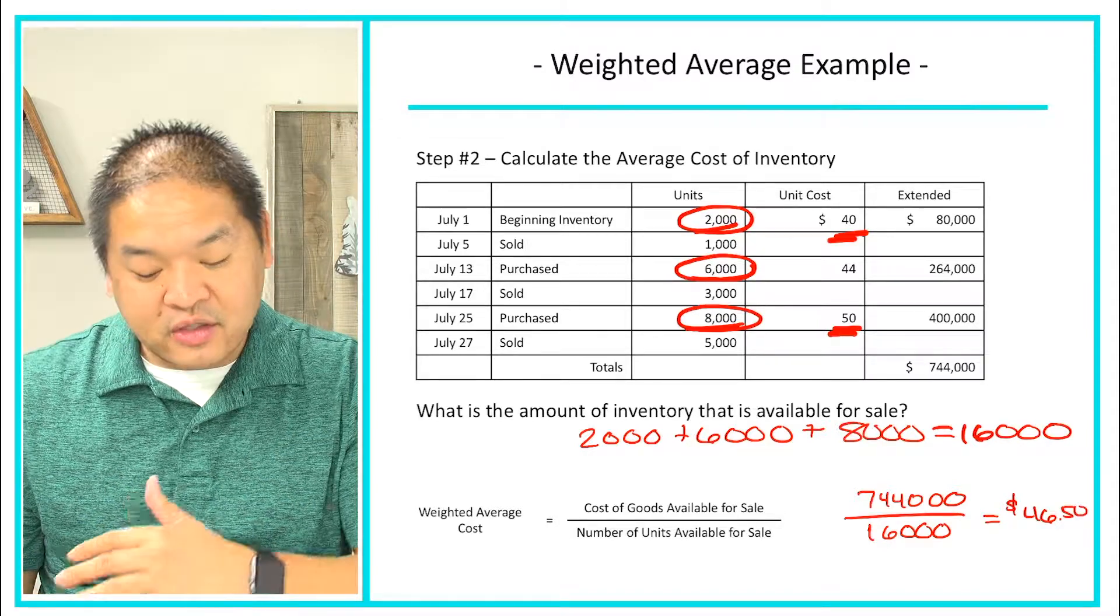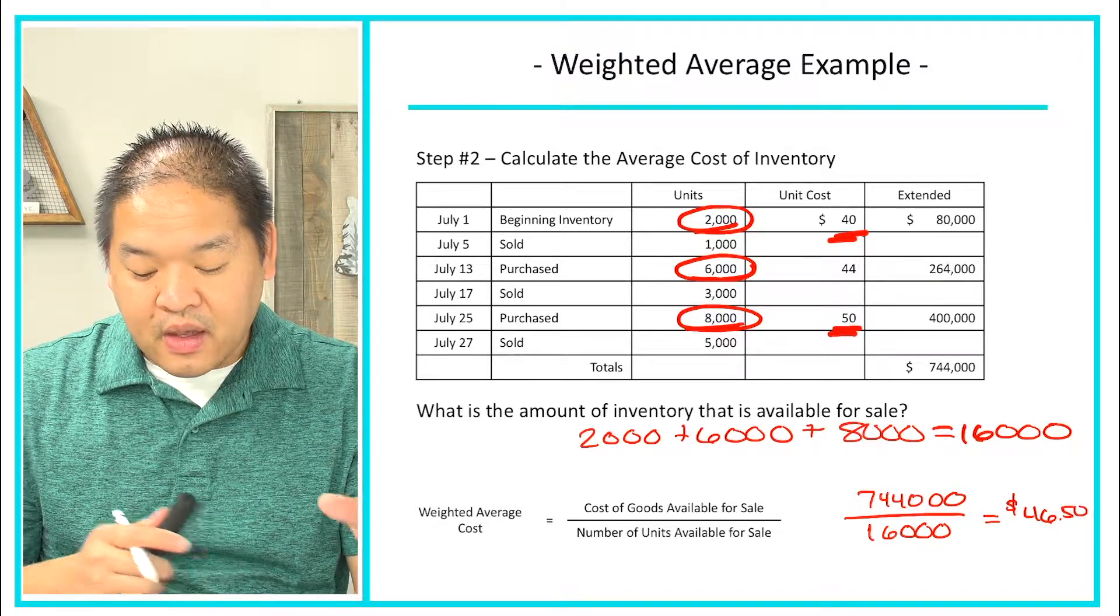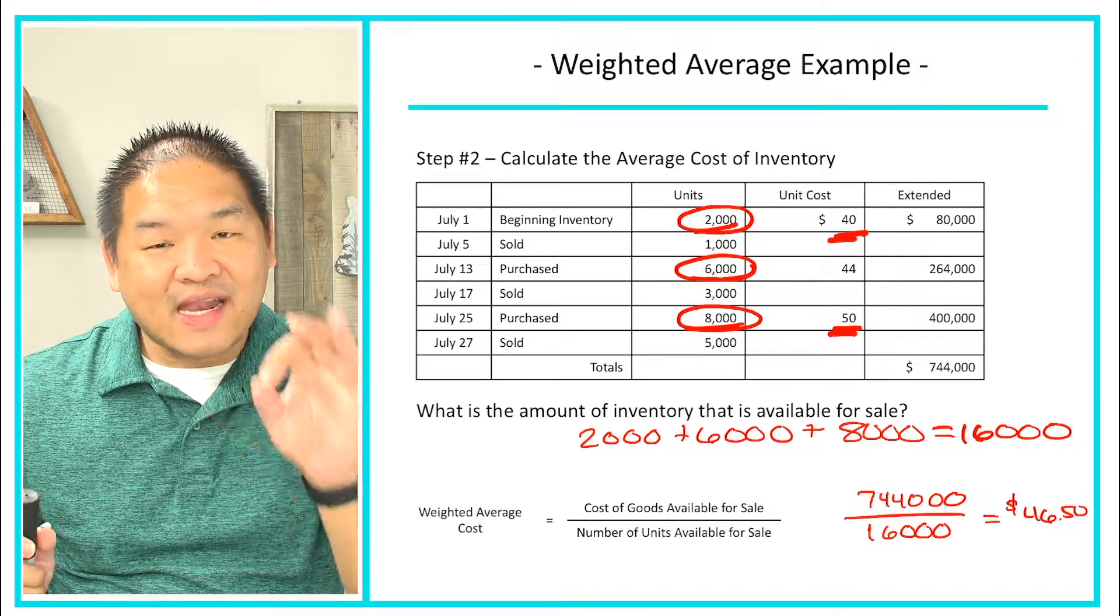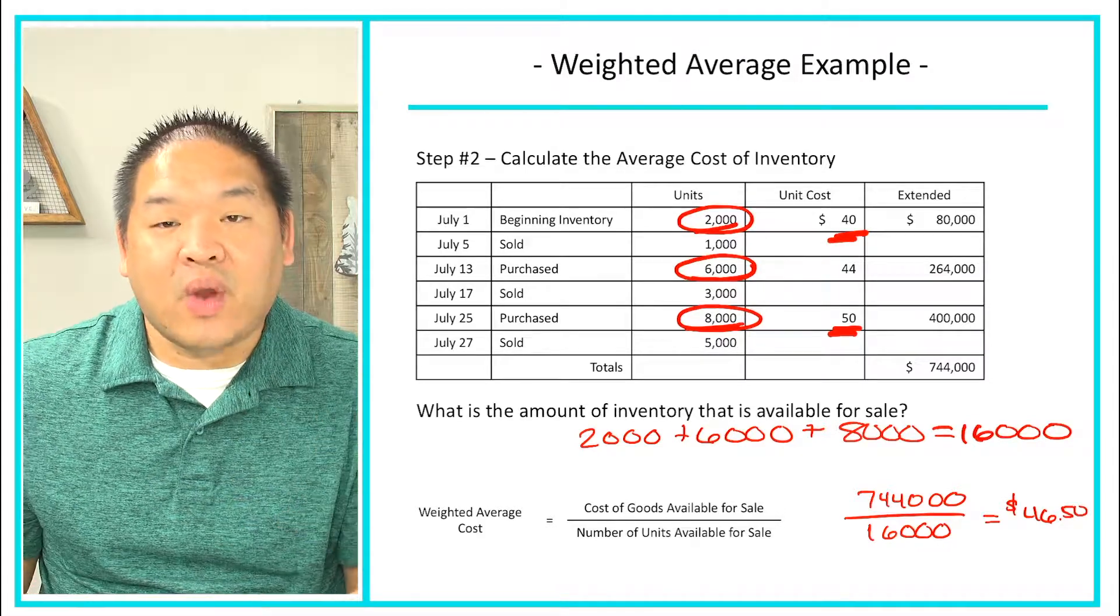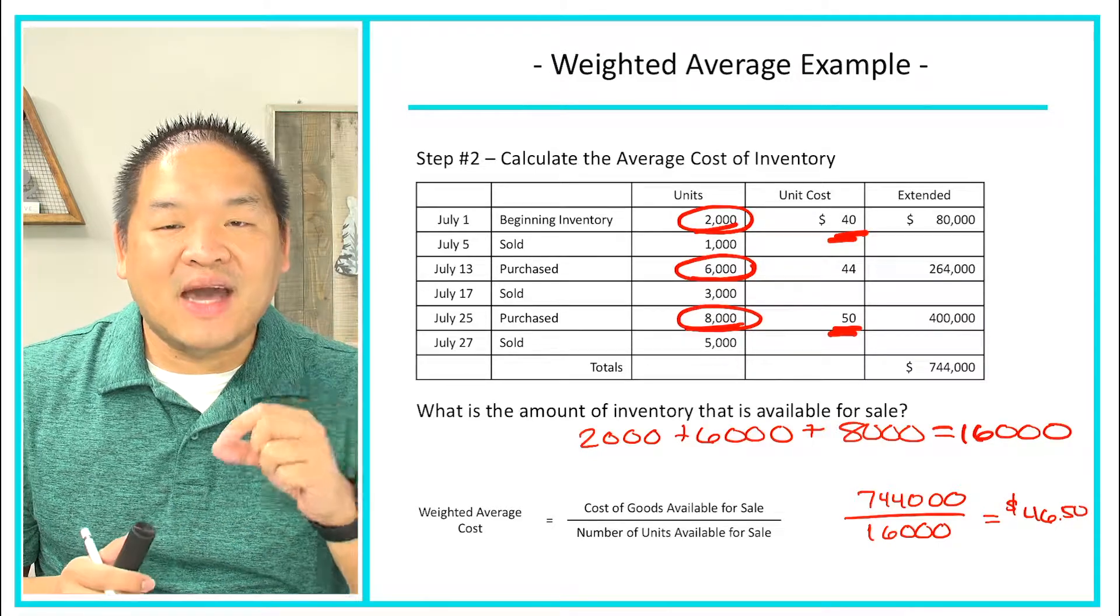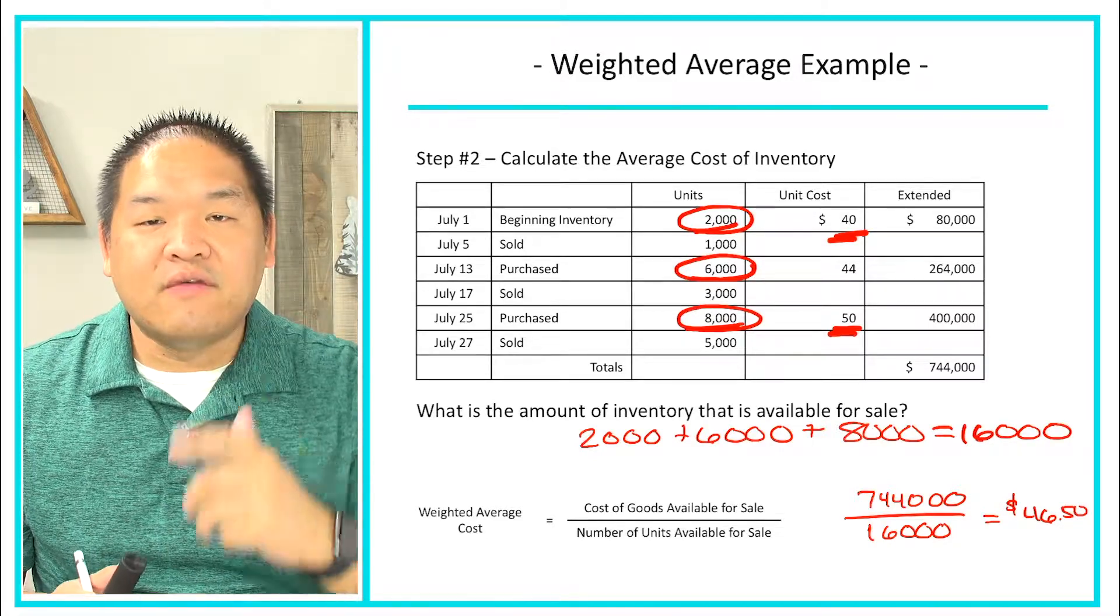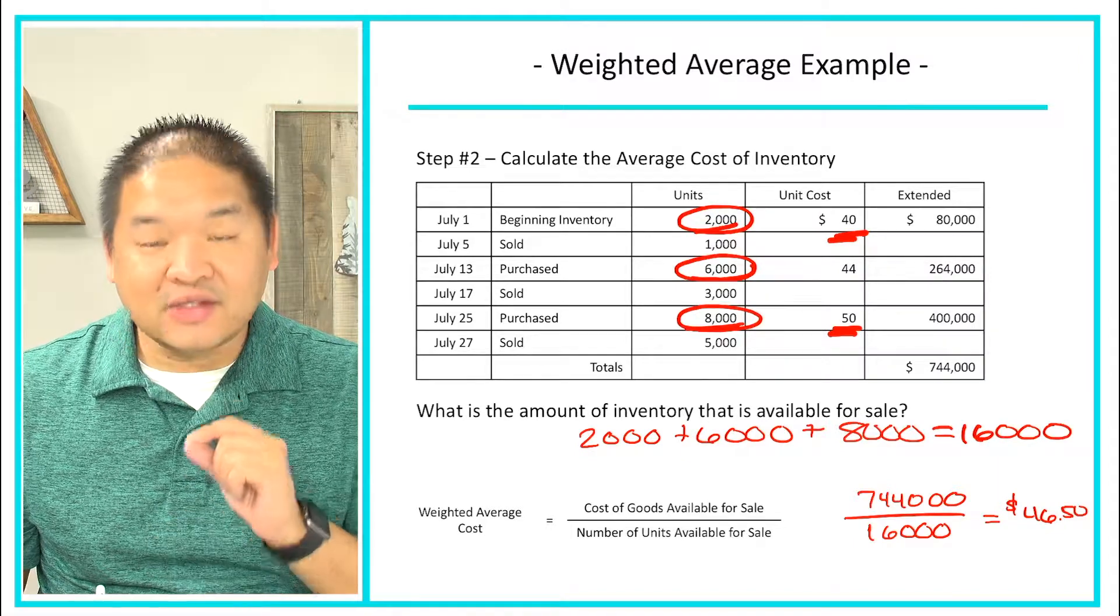It doesn't have to be exactly in the middle because we have a weighted average. There's more $50 units than there are $40 units because we have 8,000 at $50 and 2,000 at $40, but notice that that $46.50 is kind of in the middle. That's how I know that I've kind of done it right. So if you're wondering did I do this right, that number should kind of be in the middle of all of your costs, alright. So my weighted average cost is $46.50.